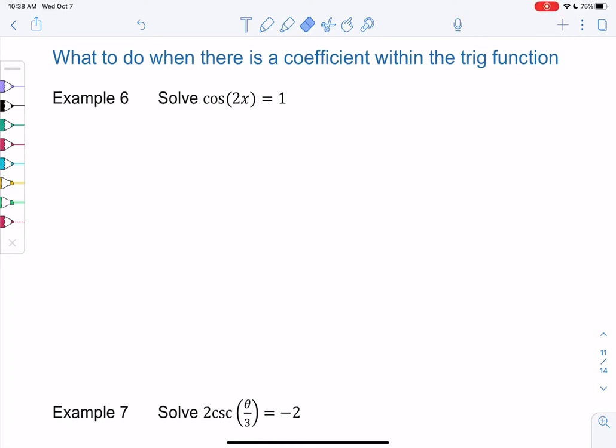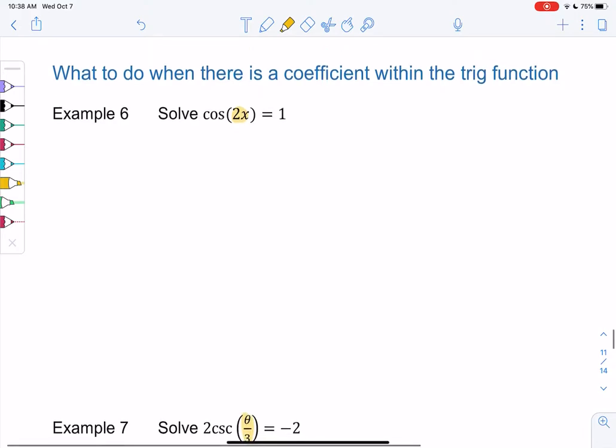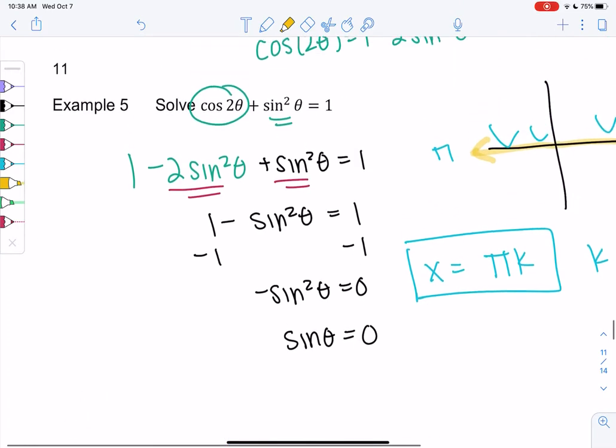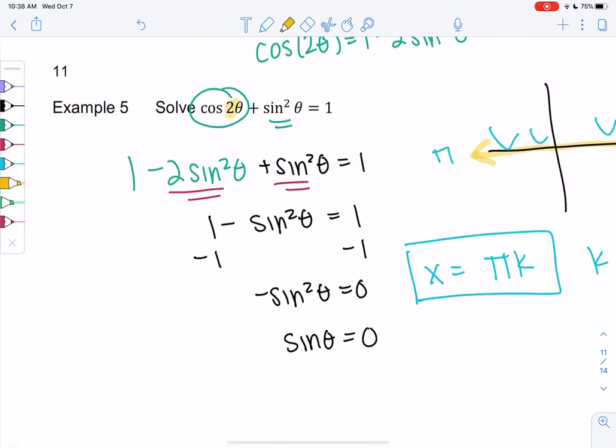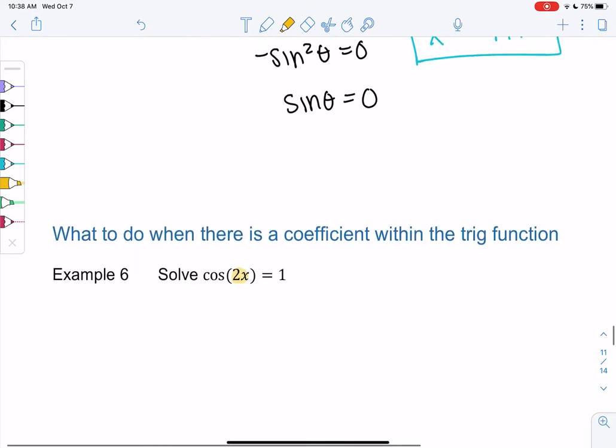Alright, so let's see how to solve equations when my inner function inside the trig function has a coefficient. We can definitely use an identity for 2x like we did earlier. We actually had to in the previous one because we had two different angles. This one's different because there is no other angle, so we actually can solve this as is.